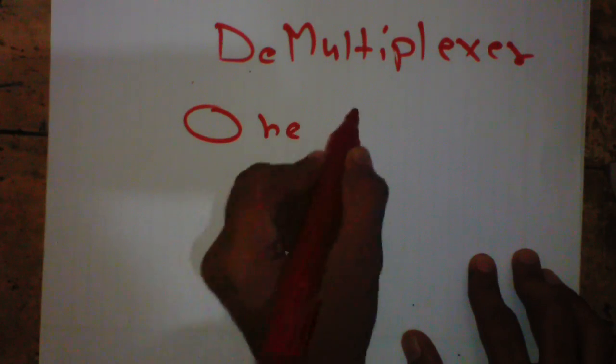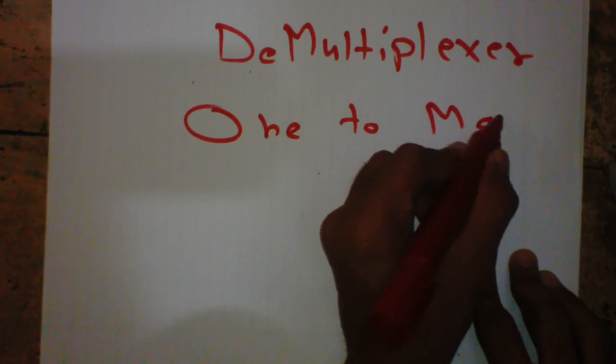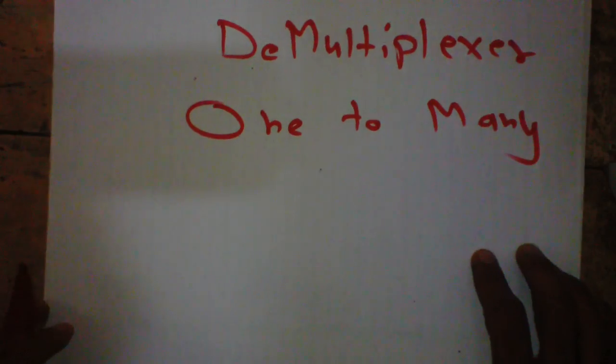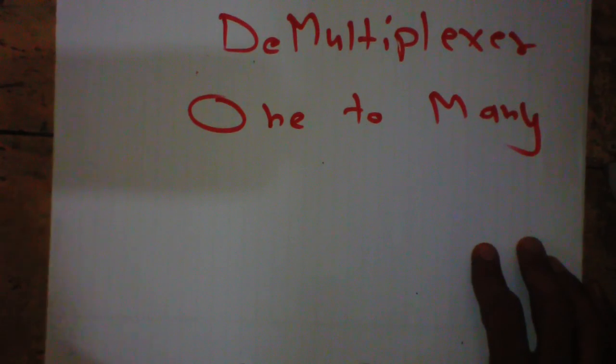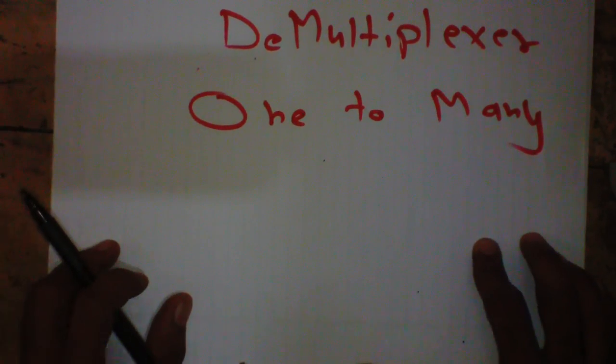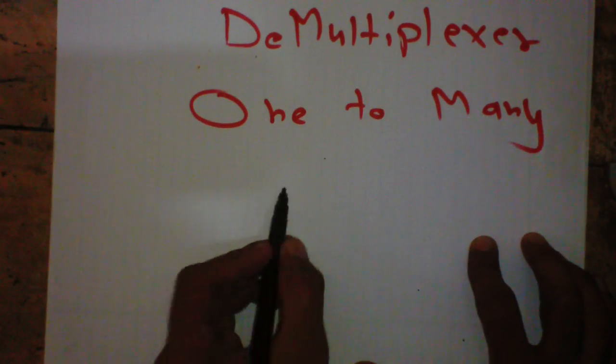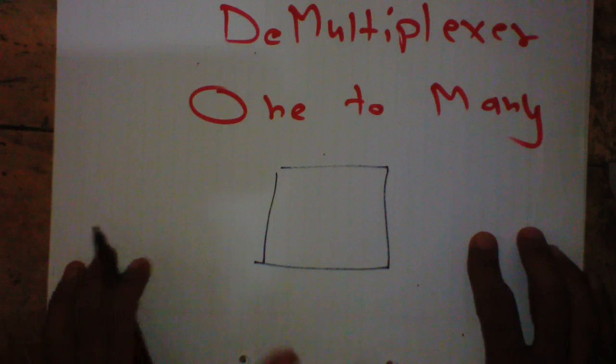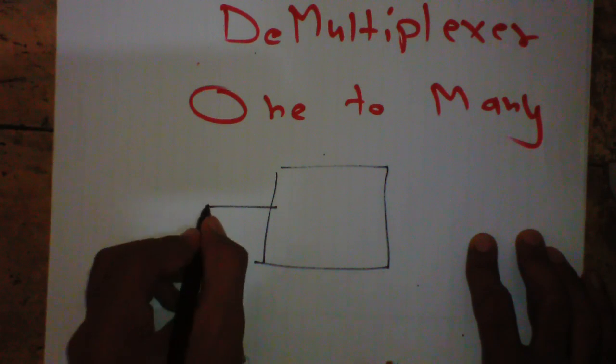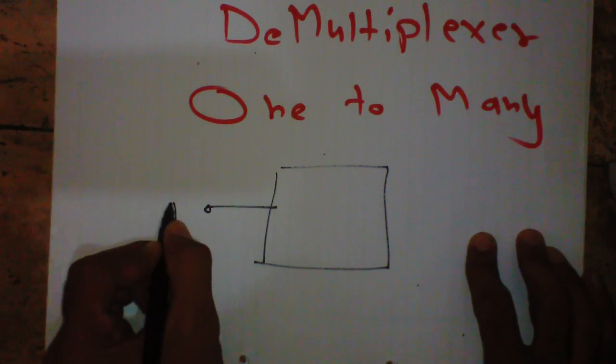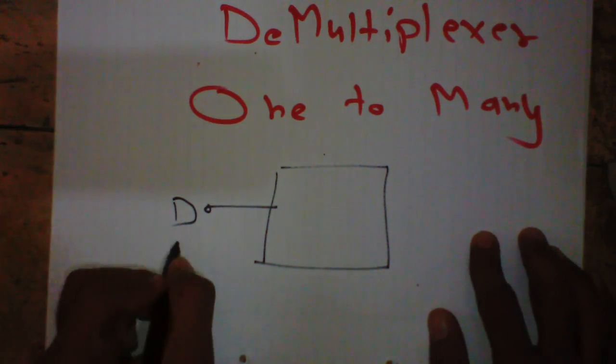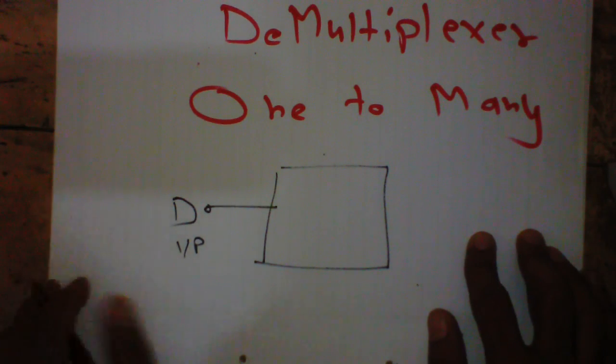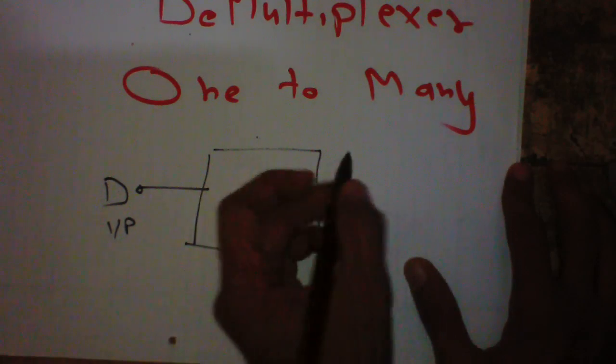One to many. So let's draw the block diagram, the basic block diagram of the demultiplexer. As the name suggests, it has one input - this is D, data input - and many outputs.